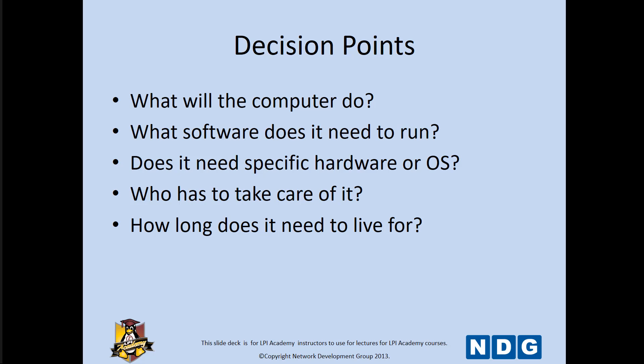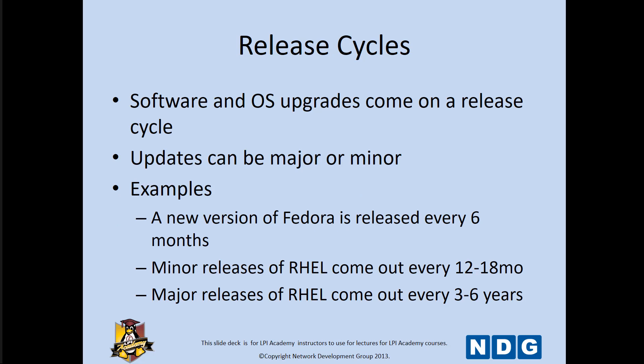Part of this has a release cycle — the software and operating system upgrades come on a cycle. Updates can be major or minor. For example, a new version of Fedora can be released every six months. Minor releases maybe every 12 to 18 months. Major releases, like real major changes, maybe every few years. It takes time to code both updates, whether minor or major, and to make sure they are ready for distribution.